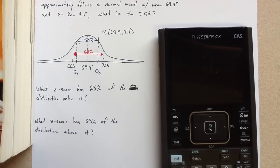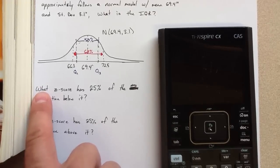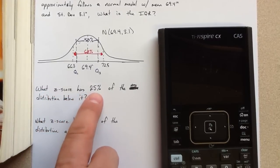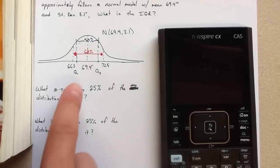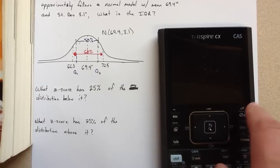We can use the normal model and z-scores to do so. The question I have in my mind to answer this question, or to solve this problem is, what z-score has 25% of the distribution below it? So what is the z-score for Q1? I'm going to go to the calculator for that.